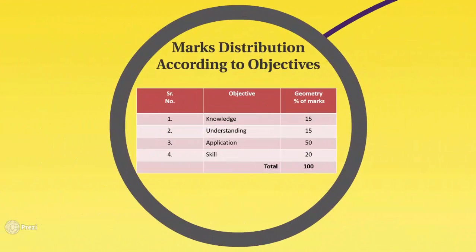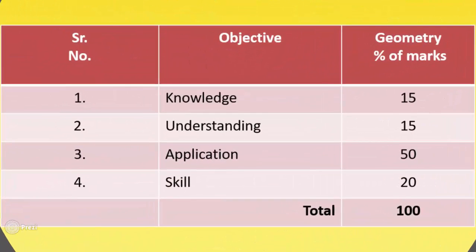Next we will see the marks distribution according to objectives. The first objective is knowledge, with a percentage of marks of 15. The second objective is understanding, with a percentage of marks of 15. The third objective is application, with 50 percent of marks allotted. The fourth objective is skill, with a percentage of marks of 20. So, we have the total percentage of marks as 100.